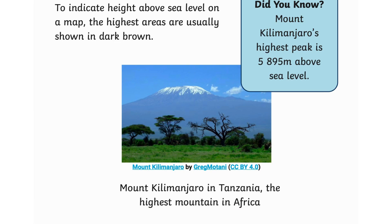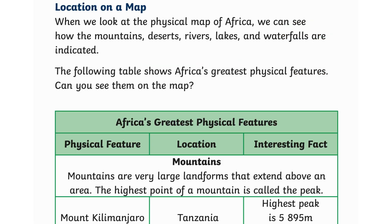To indicate height above sea level on a map, the highest areas are usually shown in dark brown. Did you know Mount Kilimanjaro's highest peak is 5,895 meters above sea level? Mount Kilimanjaro, located in Tanzania, is the highest mountain in Africa. Looking at the physical map of Africa, we can see how mountains, deserts, rivers, lakes, and waterfalls are indicated.